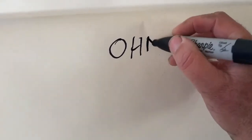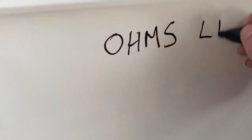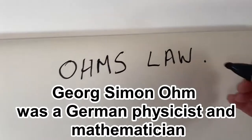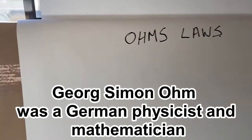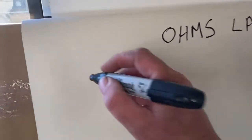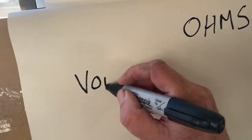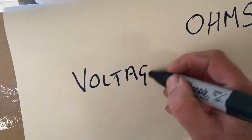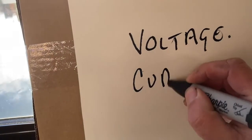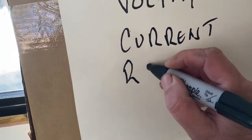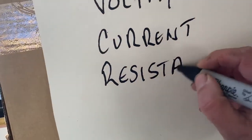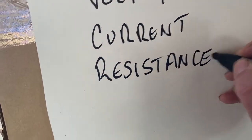So, Ohm's Law - or actually laws, because there's more than one. There are a few things we need to get started with: voltage, current, resistance, and power. Those are the four entities, for want of a better word, that we're going to look at.